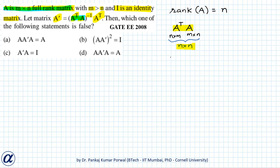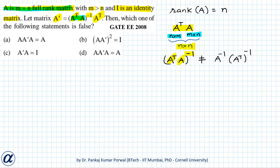Note that A transpose A inverse will not equal A inverse into A transpose inverse, because A transpose and A are not square matrices, therefore their individual inverses are not defined. The equality only holds if the multiplying matrices inside the inverse are square and individually invertible. Here A is m by n and A transpose is n by m, so both are not square matrices and cannot be individually invertible.